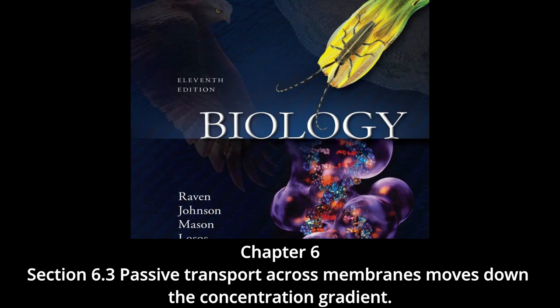Facilitated transport: many molecules cells require — including glucose and other energy sources — are polar and cannot cross the non-polar interior of the phospholipid bilayer. These molecules enter through specific channels in the plasma membrane. The inside of the channel is polar, facilitating transport of polar molecules. Each type of biomolecule transported has its own type of transporter — its own channel that fits it like a glove and cannot be used by other molecules. Each channel is said to be selectively permeable.